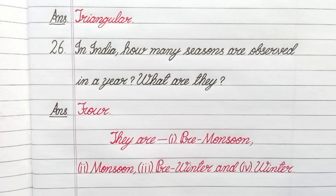Question number 26. In India, how many seasons are observed in a year? What are they? Answer: Four. They are pre-monsoon, monsoon, pre-winter, and winter.